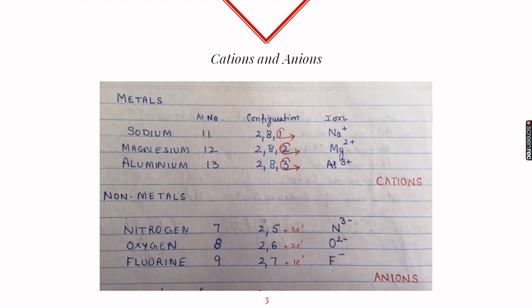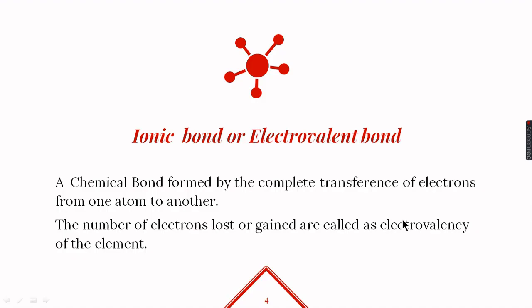This strong force of attraction between a cation and anion is called a chemical bond. Because the bond is formed between two ions, it is also called an ionic bond. An ionic bond, or electrovalent bond, is the chemical bond formed by the complete transfer of electrons from one atom to another — from a metal to a nonmetal.